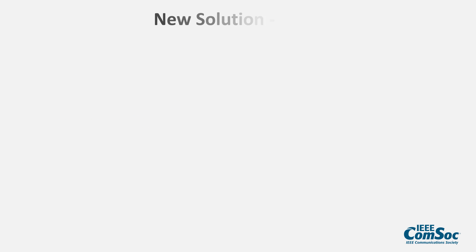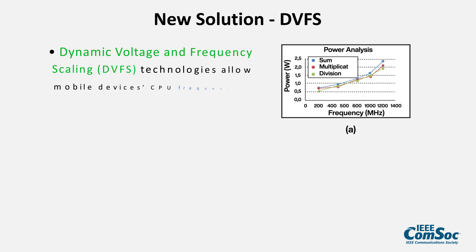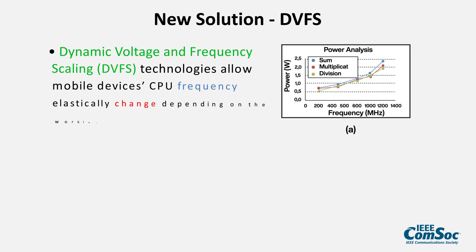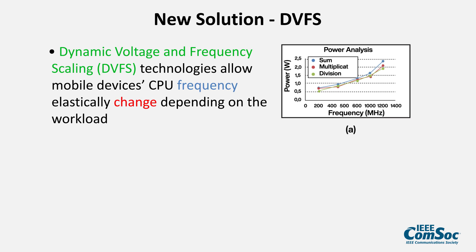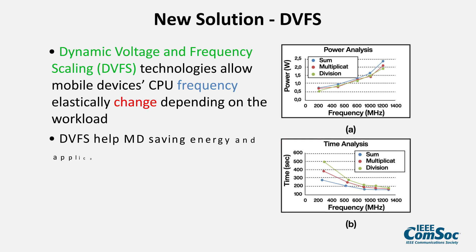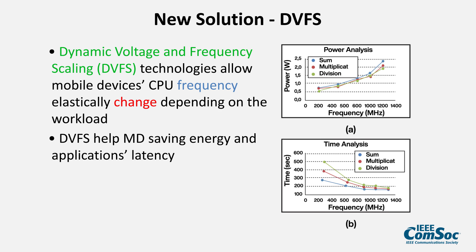Another way to reduce the energy consumption and the application's latency is to use dynamic voltage and frequency scaling (DVFS). It is a technology allowing a mobile device's CPU to be elastically changed depending on the workload. Therefore, DVFS helps mobile devices save energy and reduce application latency.